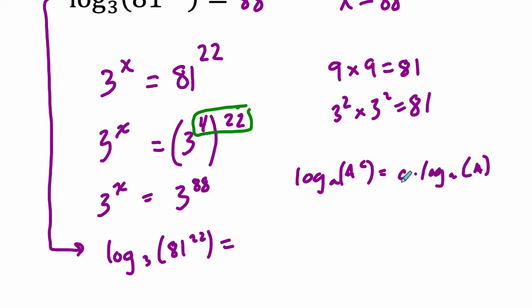And it looks like the word clog, so I call it the clog law. And here, that just means this 22 can come down in front.